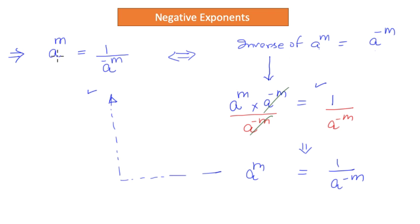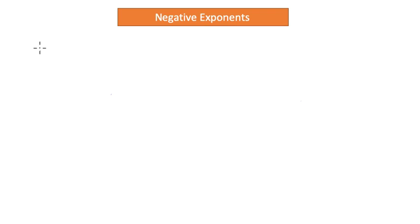Always remember this rule: if a number has a positive power, it becomes negative when it goes in the denominator. And the vice versa is also true — if the power is negative, it will become positive. The powers get reversed when they change their location between numerator and denominator. Now let us look at some examples through which we will prove that all five rules of positive exponents apply equally well on negative exponents. The very first example is 5 to the power negative 2 times 5 to the power negative 4.